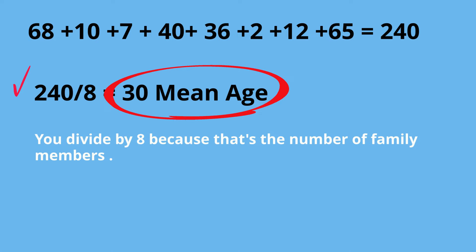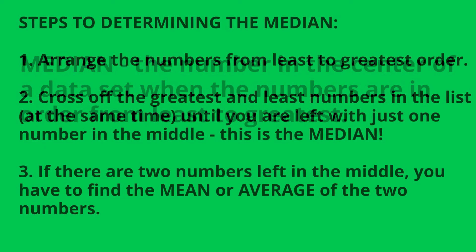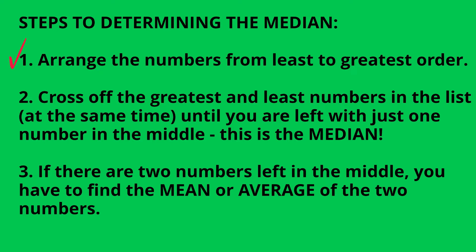Now let's look at the median. The median is the number in the center of the data set when the numbers are in order from least to greatest. Let's follow these steps. We're going to arrange the numbers from least to greatest. Then we're going to cross off the greatest and least numbers in the list at the same time until you are left with just one number in the middle. This is the median. If there are two numbers left in the middle, then you find the mean or average of the two numbers.